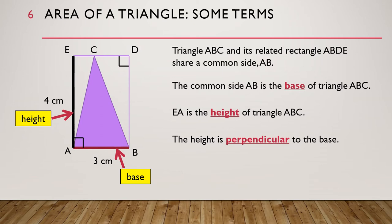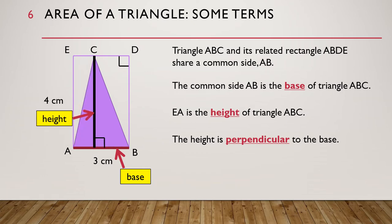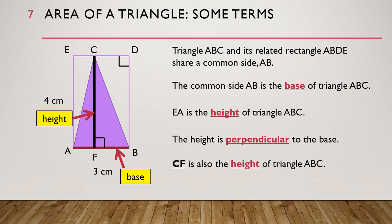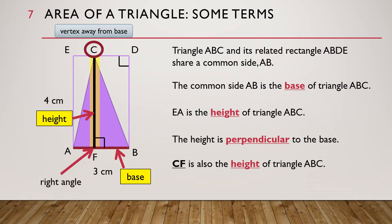We can move the height of the triangle like this. EA has the same length as CF. CF is also the height of triangle ABC. Notice that the height CF starts from C, which is the vertex of the triangle that is away from the base, and goes all the way down to the base. It forms a right angle with the base.